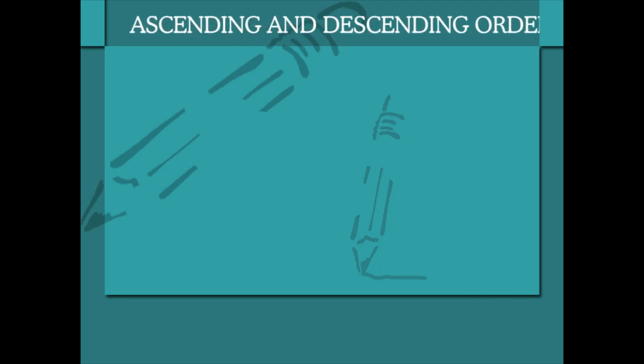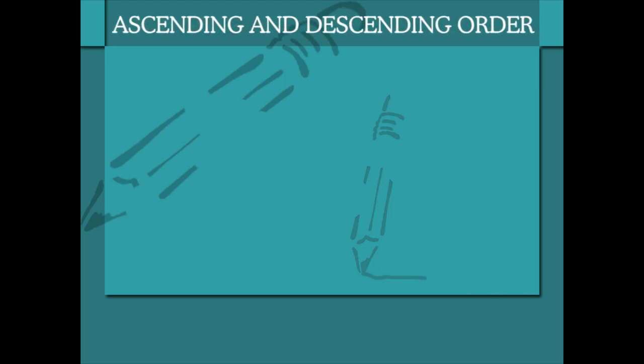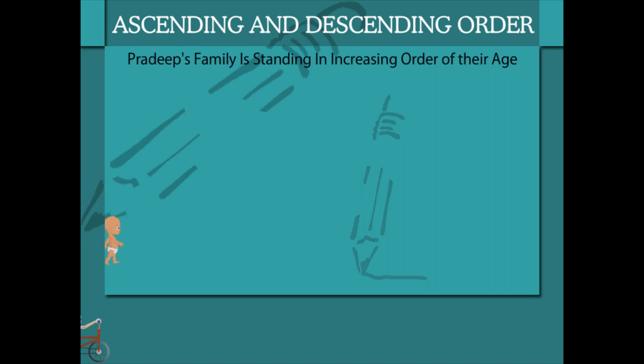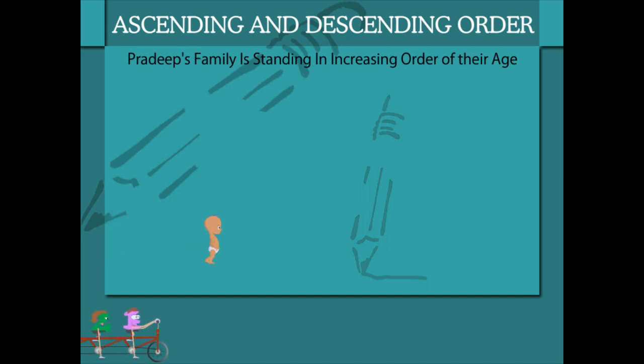Ascending and Descending Order. Ascending order means starting from the smaller and going to the bigger number.